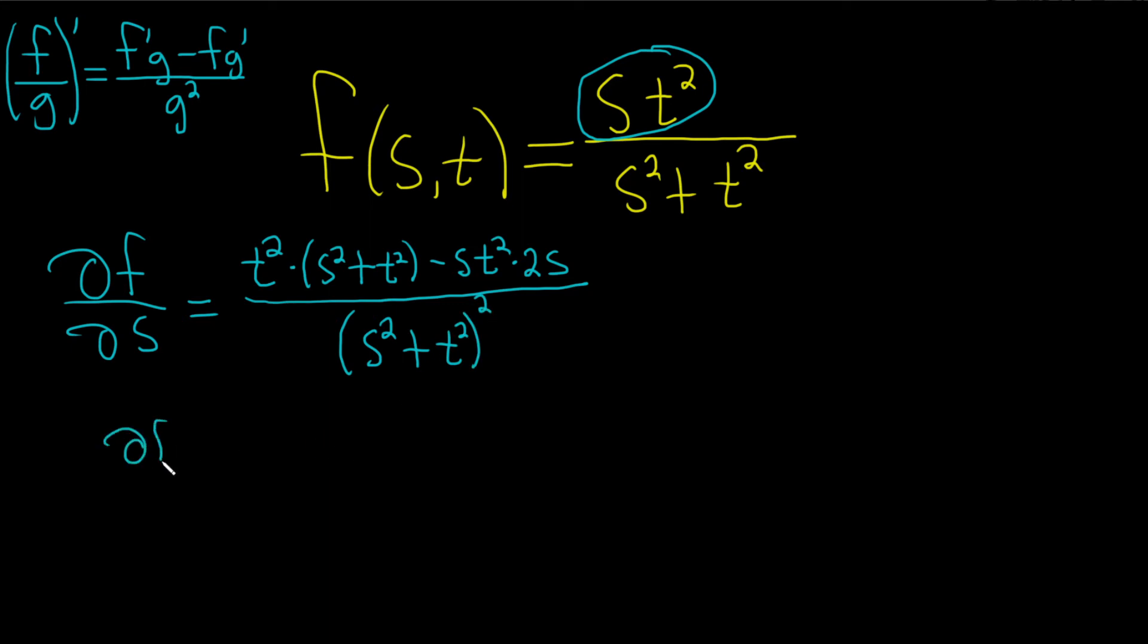Okay, so del f del s. Now we'll just carefully distribute, so t squared times s squared is t squared s squared, and then t squared times t squared is t to the fourth. And then here we'll just get minus